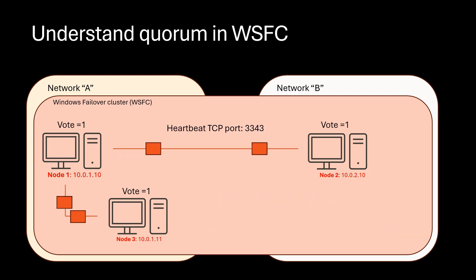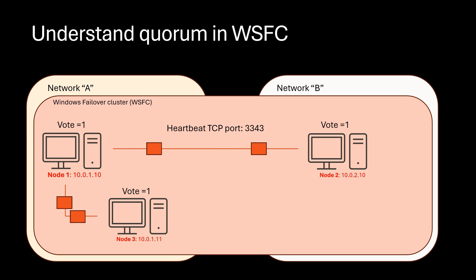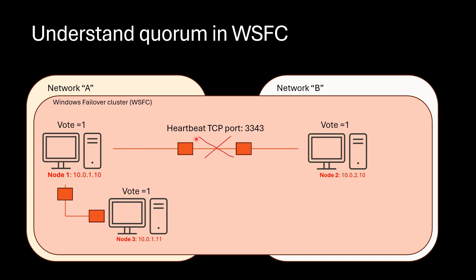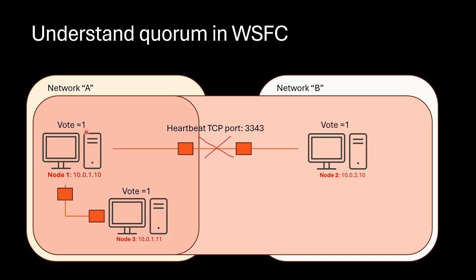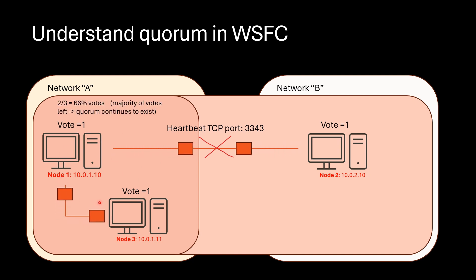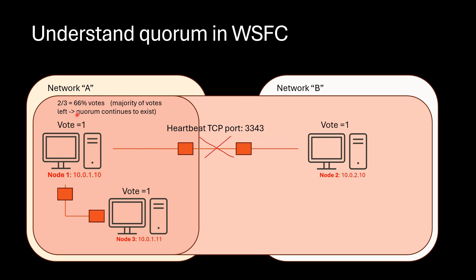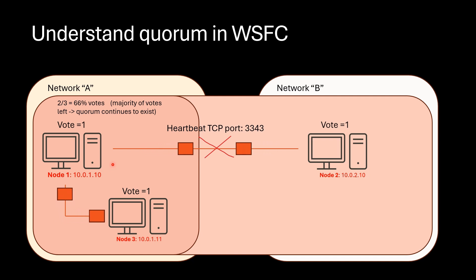Usually each node in the cluster communicates via heartbeat at TCP port 3343. Suppose primary lost heartbeat with node 2. In this case, cluster service in node 2 is taken offline and the primary side will be left with only two votes — which means 66% of the votes. Because more than 50% votes still exist, we don't lose quorum and the cluster continues to operate. You don't face outage. After losing this node, a new quorum configuration is made in the new cluster.